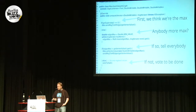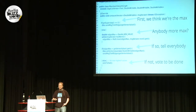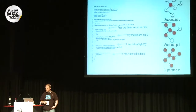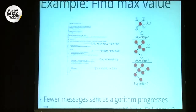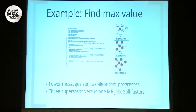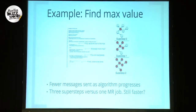We only have to override one method: compute. The message iterator is the list of values we get from everyone else. The algorithm is very simple — in the first super step we assume we're the maximum and tell everybody that. Every other super step we go through the messages, look for anyone bigger than us, and if we find one we set that as our new value and send it out. If we don't find anyone bigger, we halt. The maximum value spreads like a virus. Fewer messages are sent as the algorithm progresses, and it took only three super steps versus doing this in a MapReduce job.